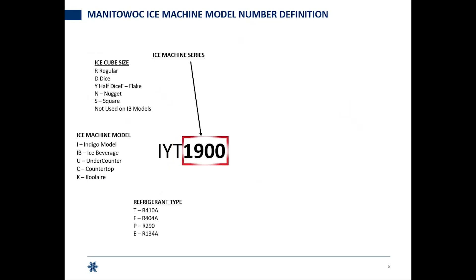After that, we're going to call out the ice machine series. This one's called out by 1900, and that's letting you know that this machine, in the best conditions — with 70-degree air entering the condenser and 50-degree water entering the water trough — in 24 hours could make about 1,900 pounds. Change the air or the water or have safety shutdowns or full bins, and that number is going to change.